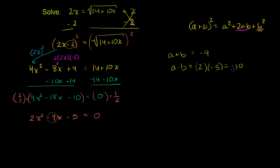Looking for numbers that add to negative 9 with a product of negative 10: 1 and negative 10 work — they add to negative 9, and 1 times negative 10 is negative 10. So we break up the negative 9x into positive x and negative 10x, giving us 2x² plus x minus 10x minus 5.